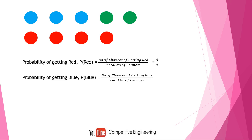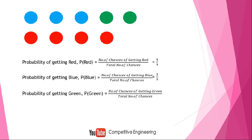The probability of getting a blue ball: there are three blue balls and total nine balls, so it is 3/9. The probability of getting green: there are two green balls and nine total balls, so it is 2/9. Taking the sum: 4/9 plus 3/9 plus 2/9 equals one. This means we can take only either a green ball, a blue ball, or a red ball.